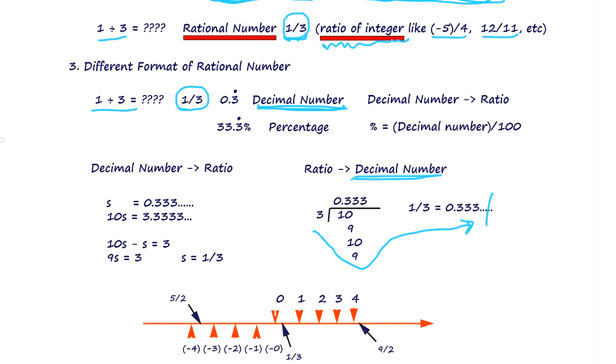So 0.333... is a decimal number. Decimal numbers are basically the same as ratios, rational numbers.